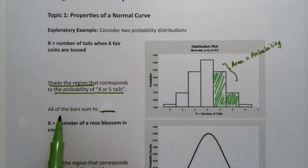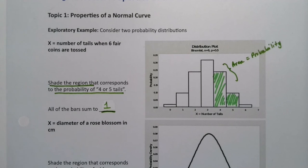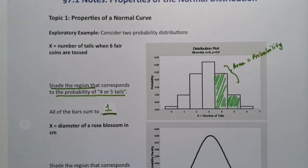We learned in Chapter 5 that all the bars must add up to one, because the sum of the probabilities for a sample space must be one.